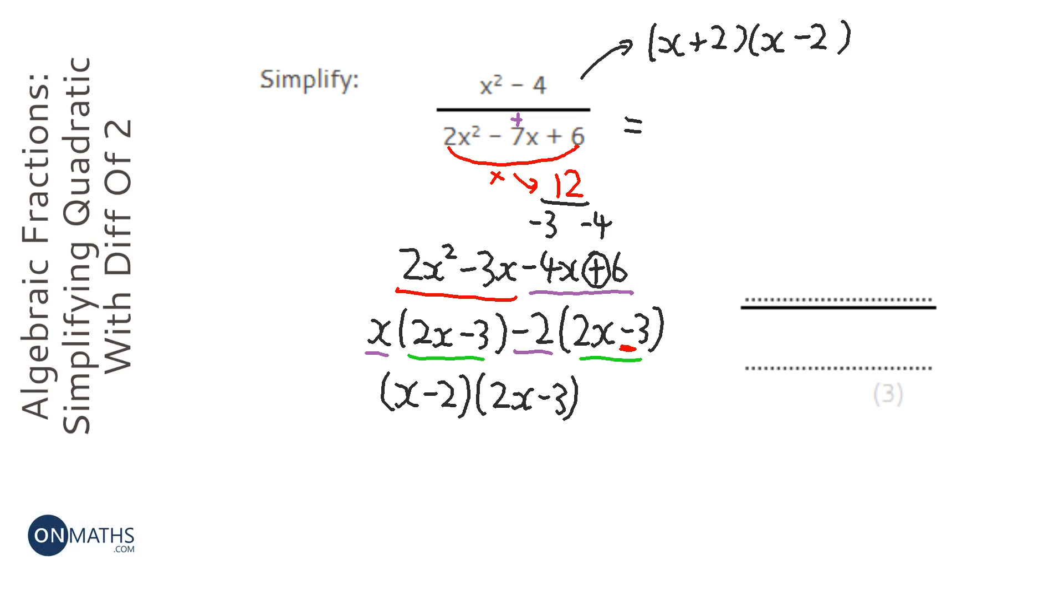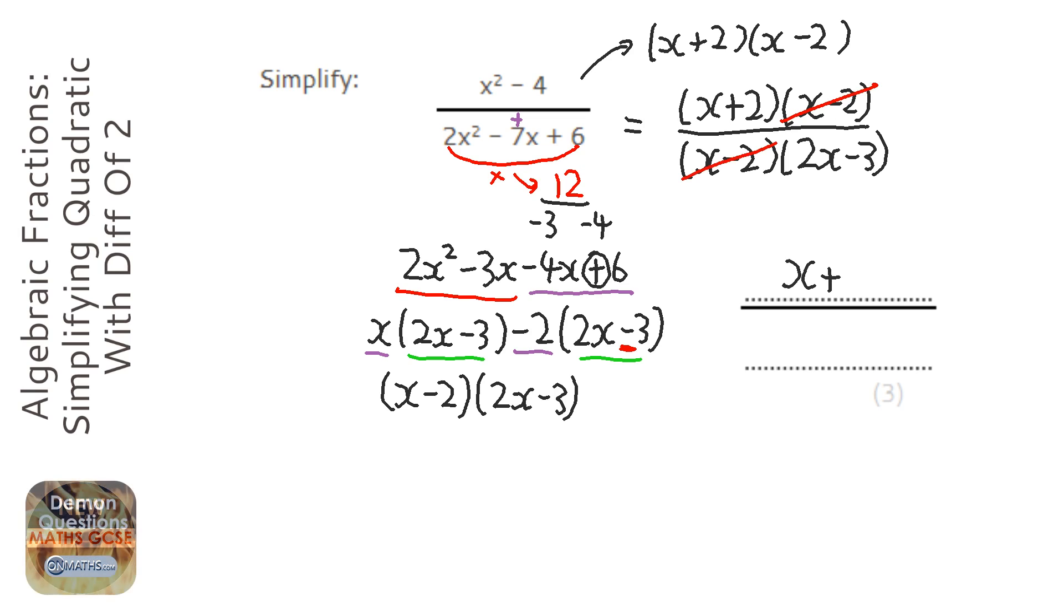So let's rewrite this fraction but with factorized versions. We've already done the one at the top earlier, and let's put the one at the bottom in. Now you'll always notice something when you do these: you'll have a bracket that's the same. We just simply divide top and bottom by x minus 2, and that leaves us with x plus 2 at the top and 2x minus 3 at the bottom.